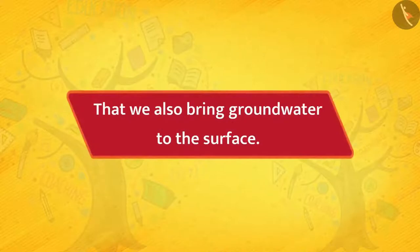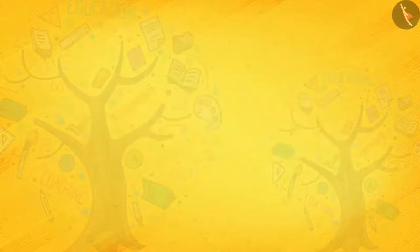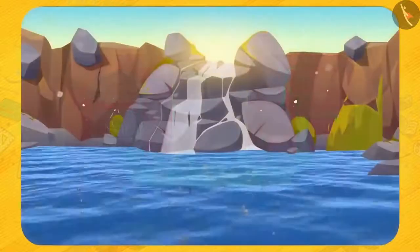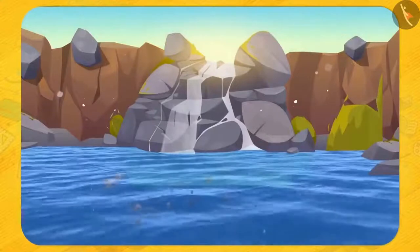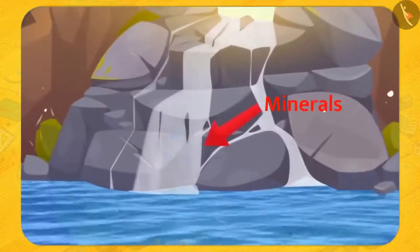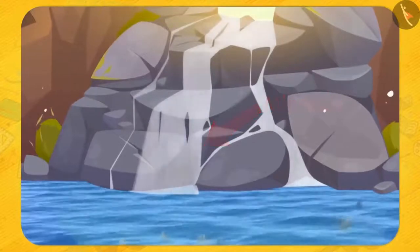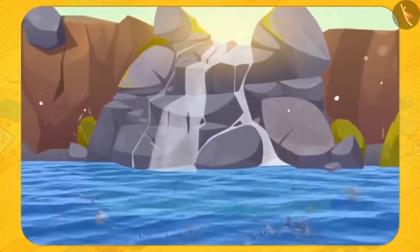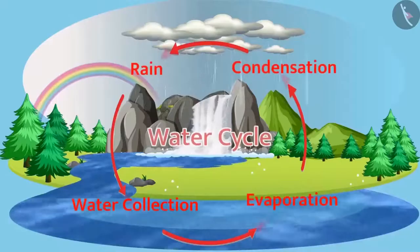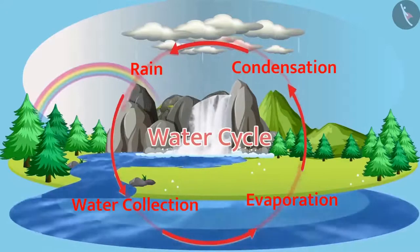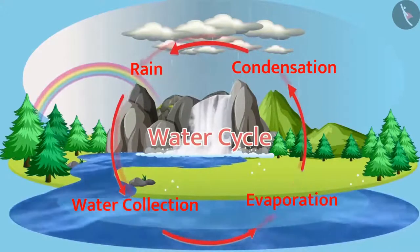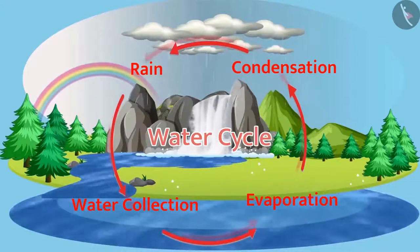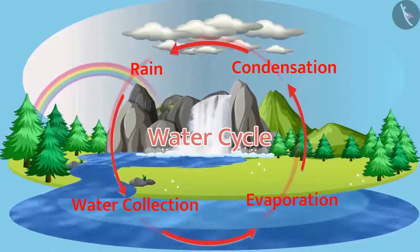Friends, do you know that we also bring groundwater to the surface? Via well or tube well. Some part of the rain water also flows from the top of the rock, dissolving the soluble minerals present in the rock and finally mixes in the sea. In this manner, rain water carries many minerals from the land to sea and the same is used by sea creatures. The water evaporates from the reservoir and falls to the ground in the form of rain, joins the water bodies, and then again evaporates. So in this way, water is moving in a circular manner, which is called the water cycle.